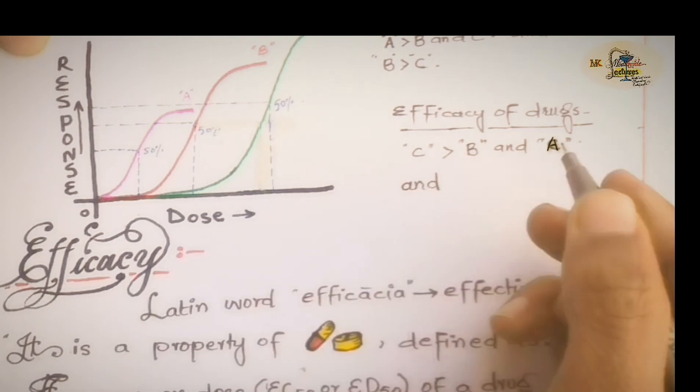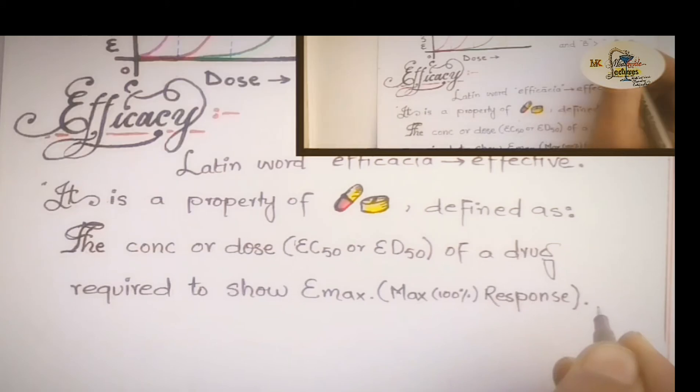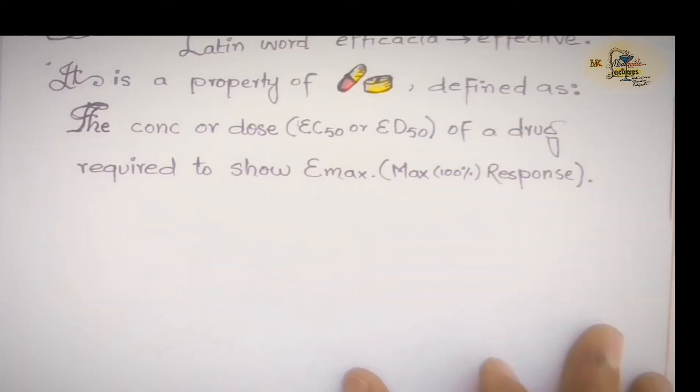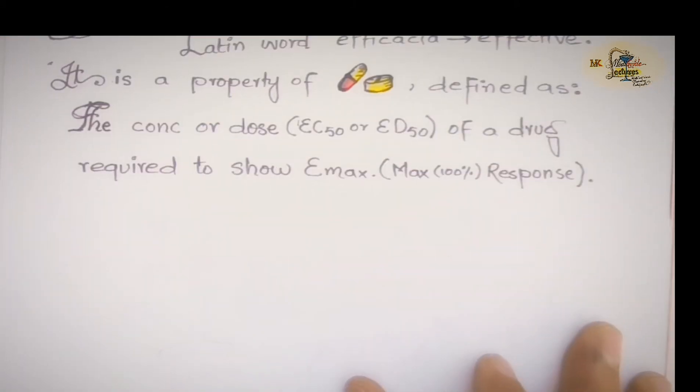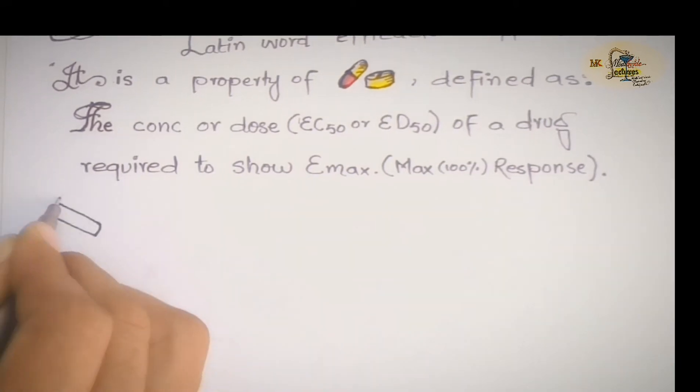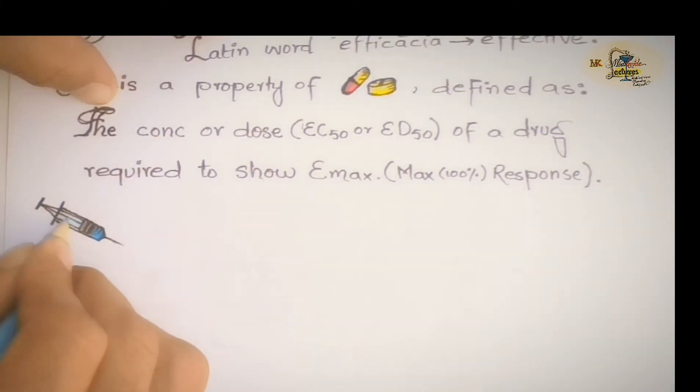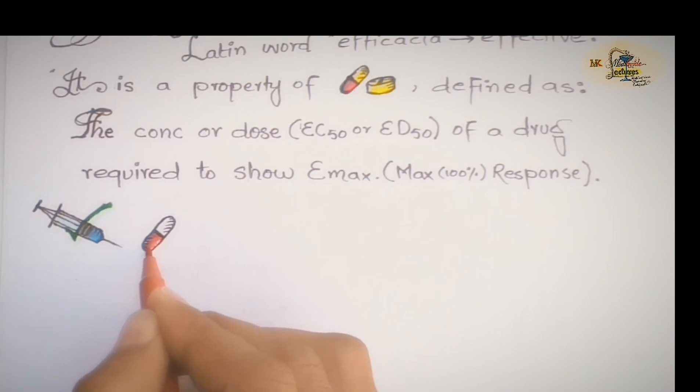And similarly drug B is more efficacious than drug A. But one point to be noted here is it is not necessary for a drug to be most efficacious and least potent or most potent and least efficacious. Moreover, the drug selection for treatment purposes is mainly done on the basis of efficacy.